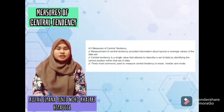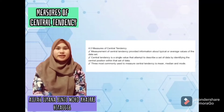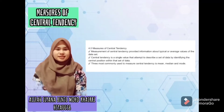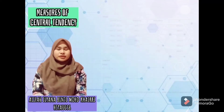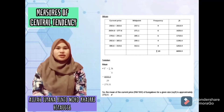Today I would like to explain about measure of central tendency. Measurement of central tendency provides information about the typical or average value of the data set. Central tendency is a single value that attempts to describe a set of data by identifying the central position within the set. The three most commonly used measures of central tendency are mean, median, and mode. First, we go to the mean. Mean is the statistical average used to derive the central tendency of a data set.